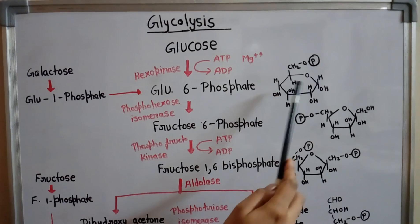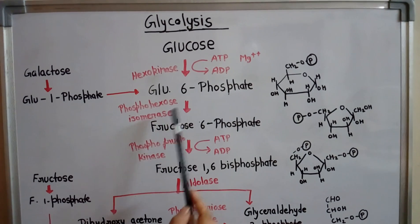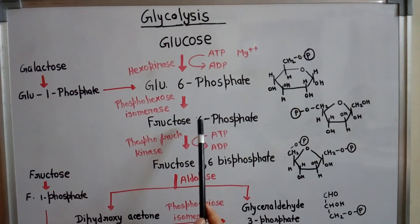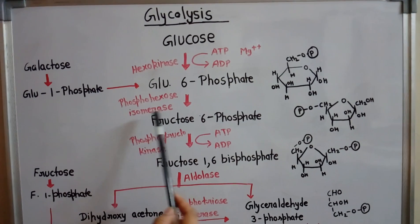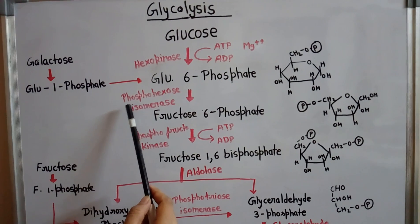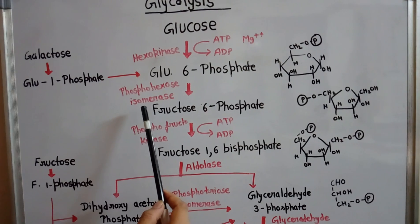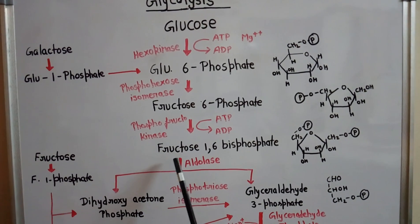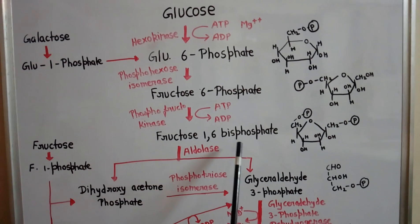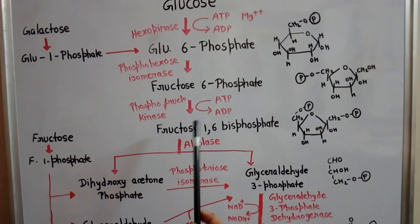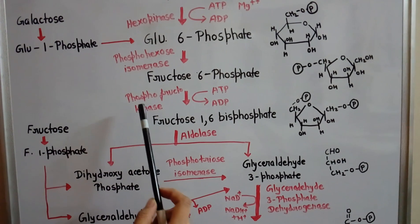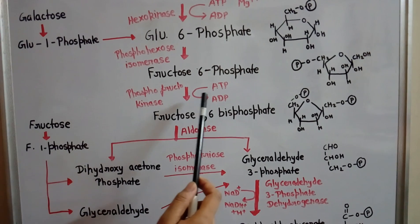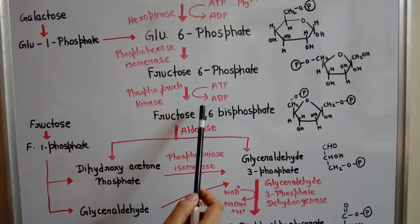Glucose-6-phosphate is converted to fructose-6-phosphate — this is an isomerization process that takes place in the presence of the enzyme phosphohexose isomerase. Then fructose-6-phosphate is converted to fructose-1,6-bisphosphate in the presence of the enzyme phosphofructokinase, and one molecule of ATP is converted to ADP.